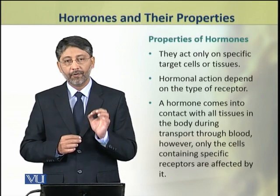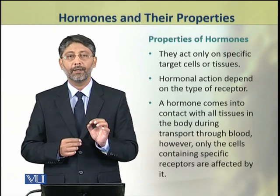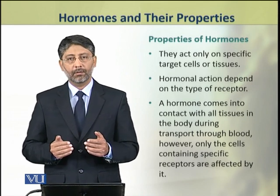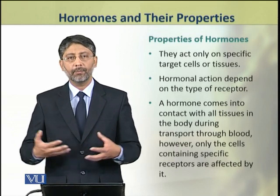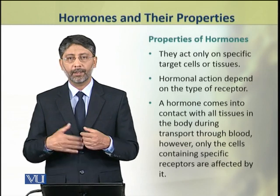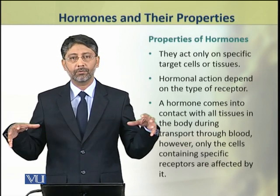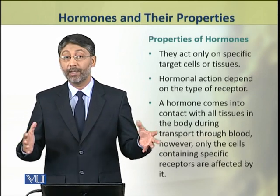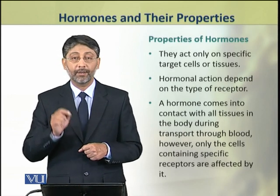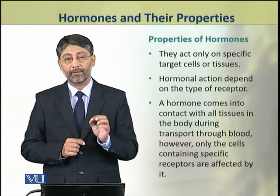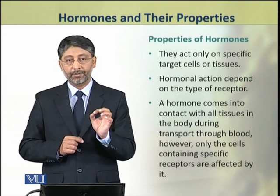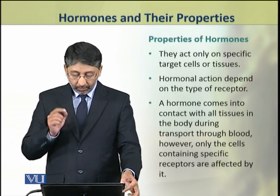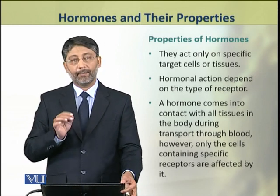The specificity of hormonal action depends on the types of receptors. A hormone comes in contact with all types of tissues in the body during circulation, but this hormone acts only on its target cells. This is because of the presence of receptors, which are not present in every cell. Only the cells which have these receptors are affected by the hormone.